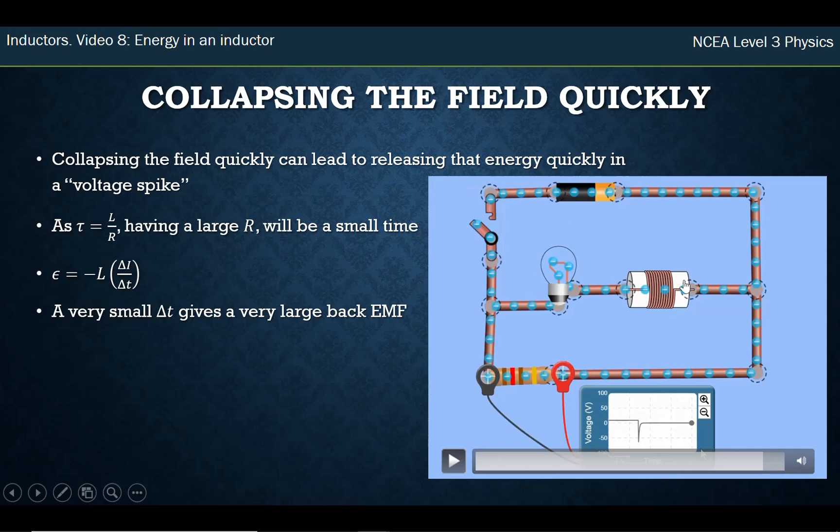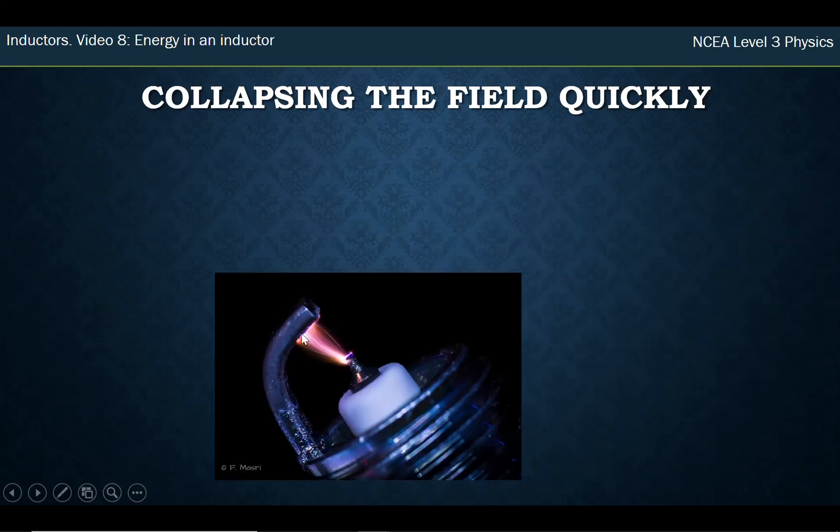This is all just happening because we've set a situation up where we can get the magnetic field collapsing very quickly, and we can generate large voltages. Now, this can be quite dangerous, a large back EMF.